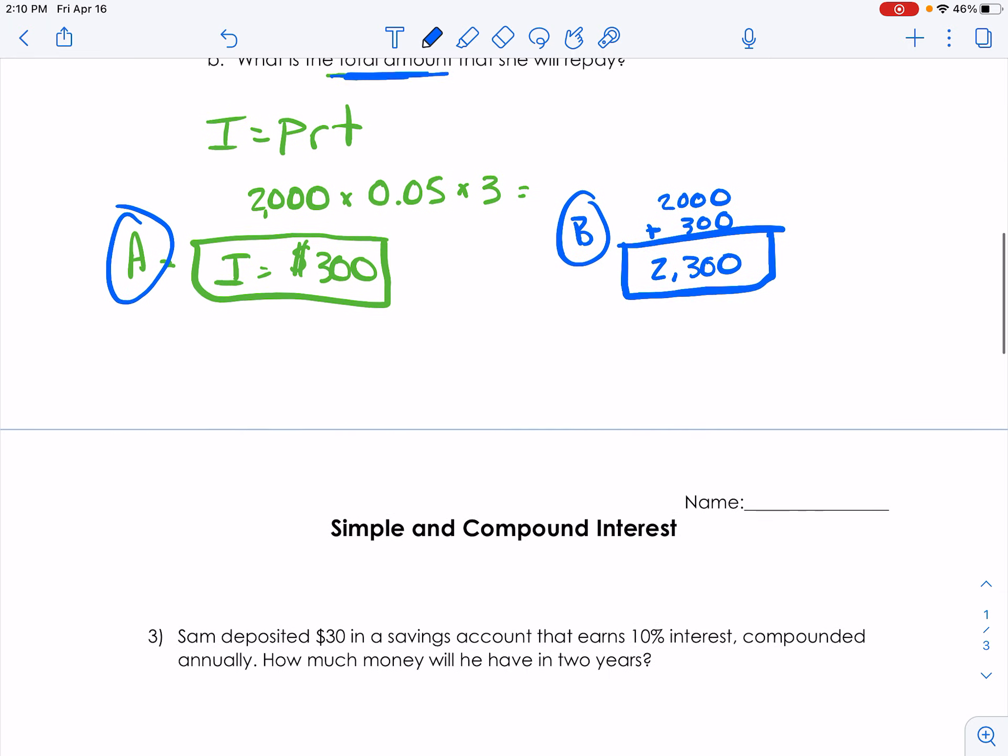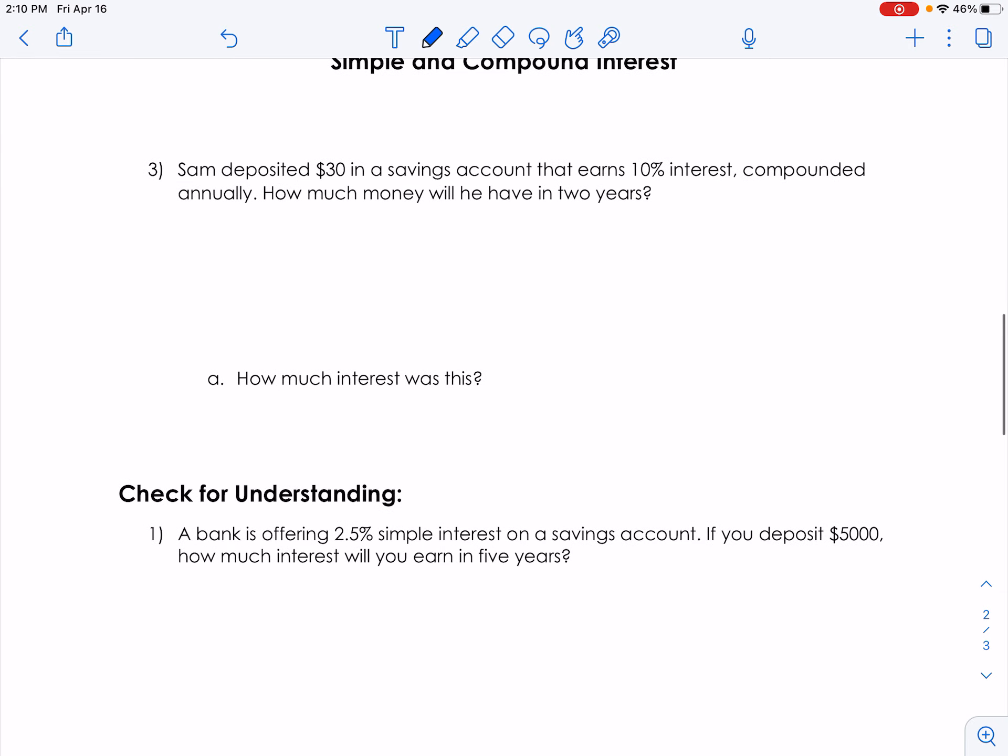Now let's take a look at the third one. Here it says Sam deposited $30, that's our principal, in a savings account that earns 10% interest, so that's our rate. And if we make it a decimal, it's 0.10.